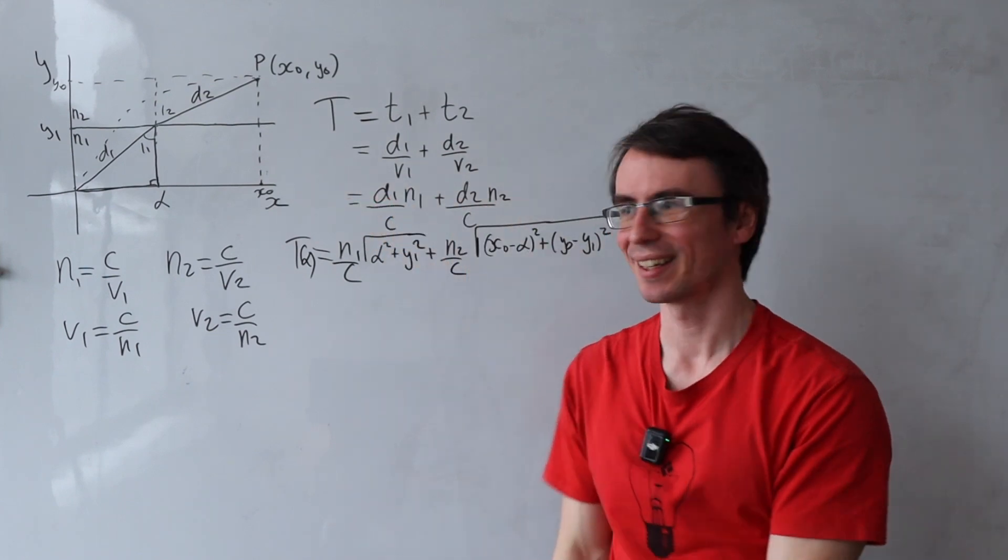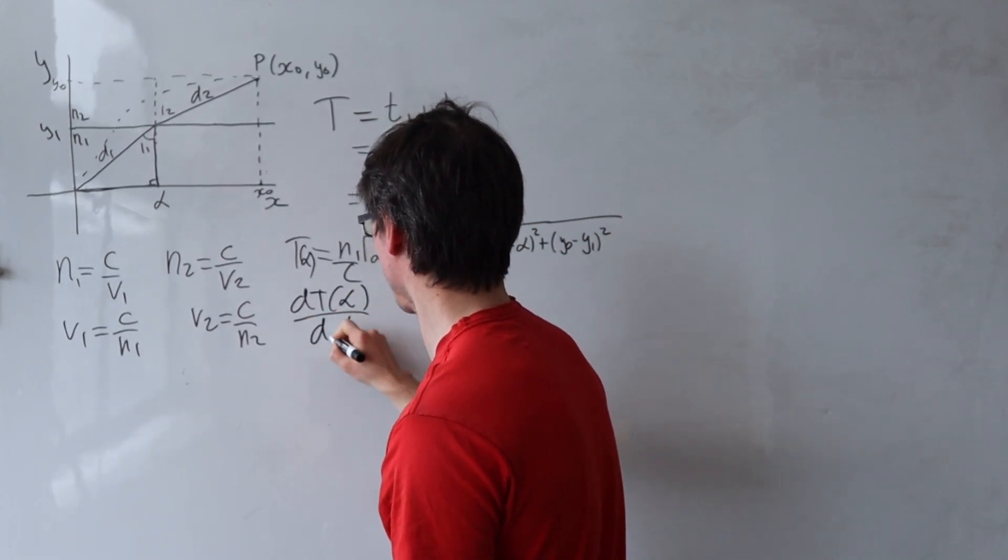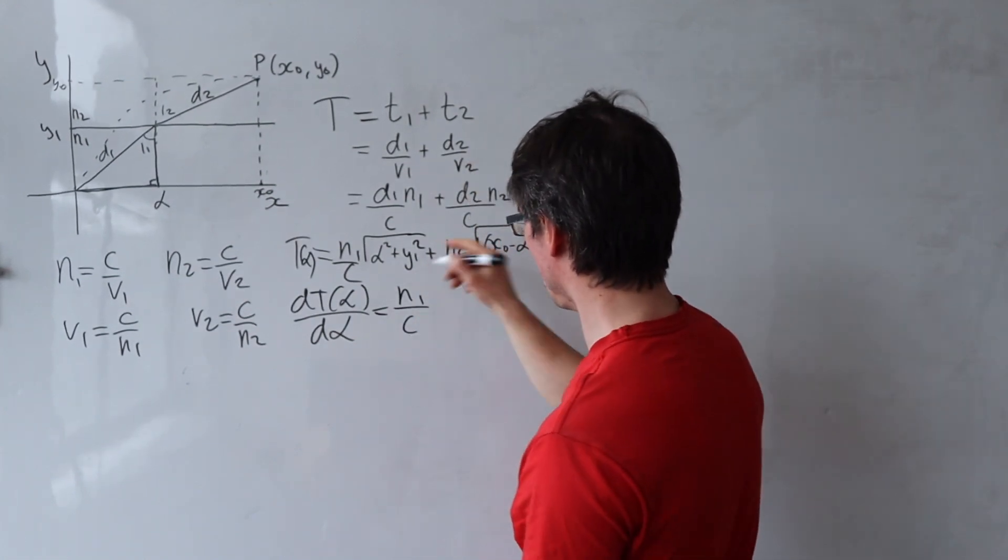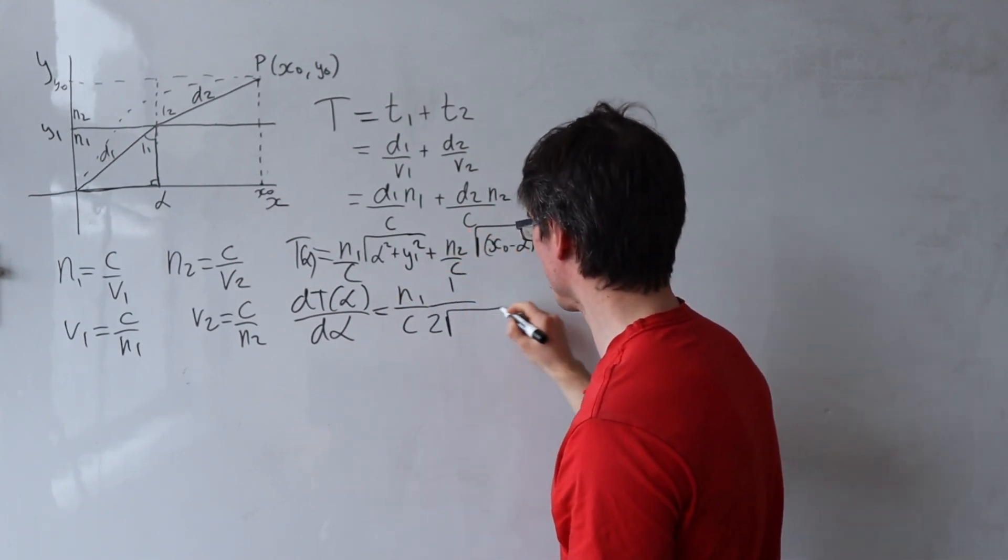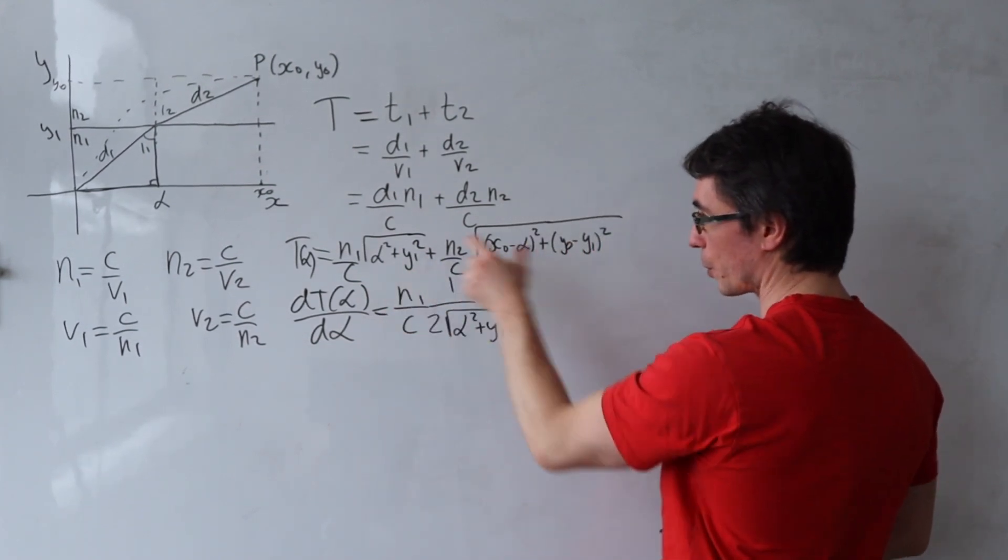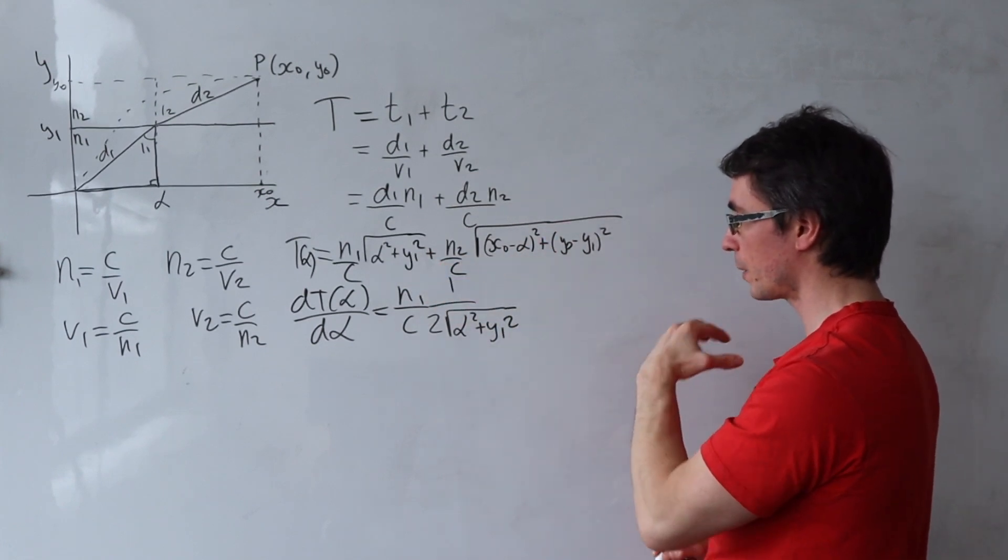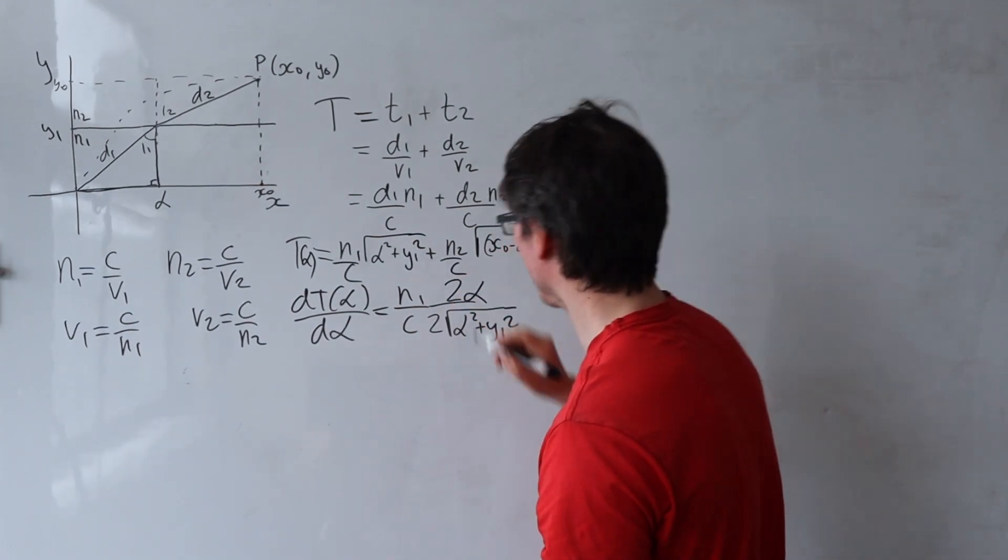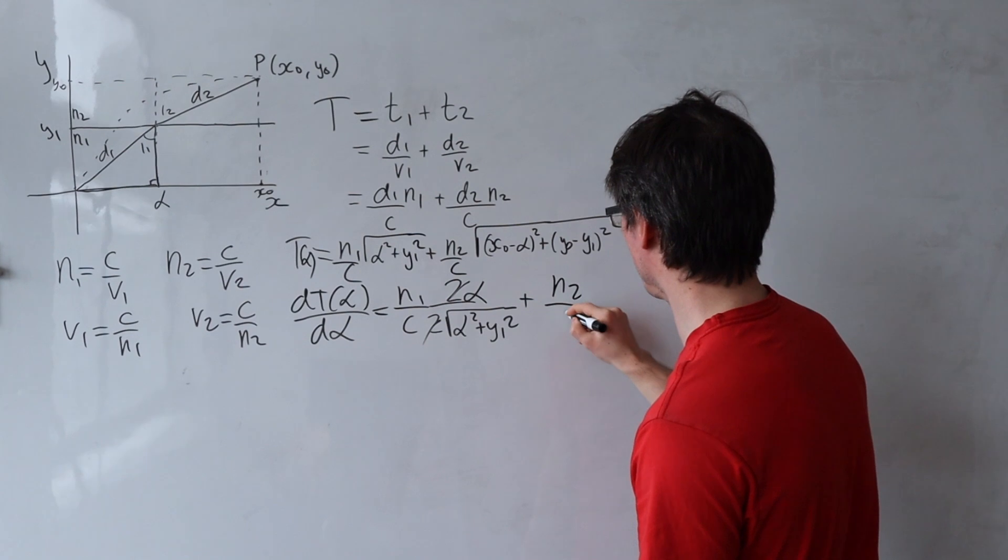So if you think about it this total time here is actually a function of alpha. Now as I was speaking I noticed a small error. Let's fix that. It chooses the path that minimizes time. We need to differentiate. So the t alpha divided by d alpha is going to be equal to now n1c that will be the derivative of the square root which is going to be 1 over 2 the square root of alpha squared plus y1 squared. However that's just the outside function. The inside function is alpha squared plus y1 squared. So we need to differentiate that with respect to alpha which is just 2 alpha by the chain rule.